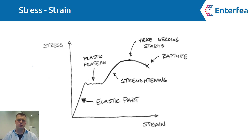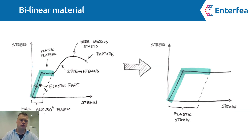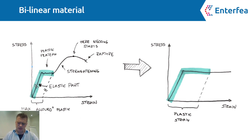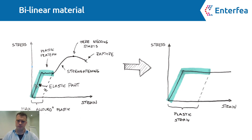The discussion about nonlinear material should start with a stress-strain curve, and I'm pretty certain you've seen it already. You can notice on the left that at the beginning material acts elastically, and then there is a plastic plateau. When you use a bilinear material model on the right, it's actually pretty reasonable. But charts seem pretty scientific, so let's make it a bit simpler.